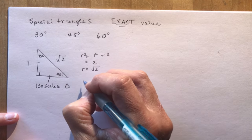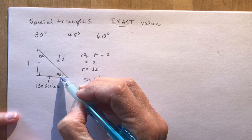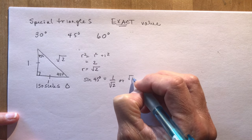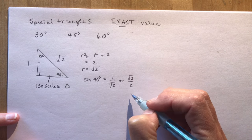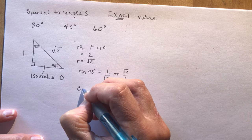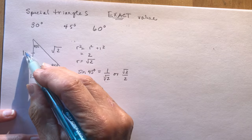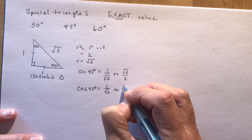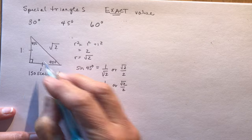From the 45° triangle: sin 45° = 1/√2 (or √2/2 if you rationalize the denominator). Cos 45° is the same: 1/√2 or √2/2 — adjacent over hypotenuse. And tan 45° = 1/1 = 1. That's the 45° triangle done.